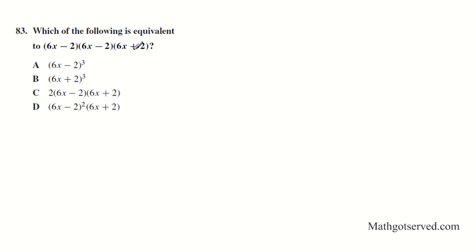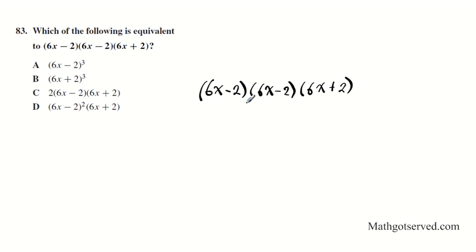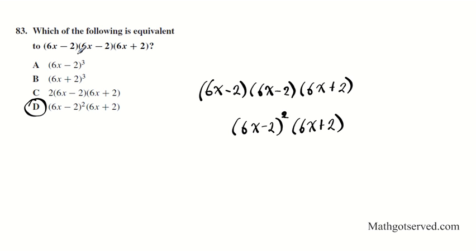Which of the following is equivalent to (6-6 minus 2) times (6-6 minus 2) times (6-6 plus 2)? We have two copies of (6-6 minus 2), so we can express them as (6-6 minus 2) squared. We have only one copy of (6-6 plus 2) so we leave it alone. That gives us the equivalent form, which matches option D. Remember: multiplication goes with exponents — with powers.